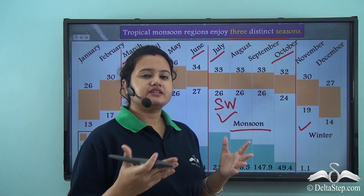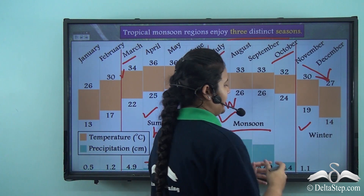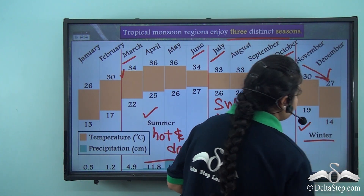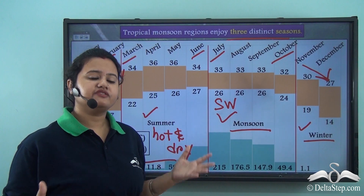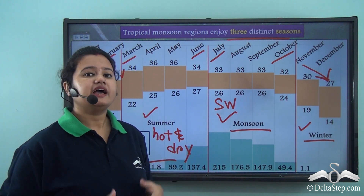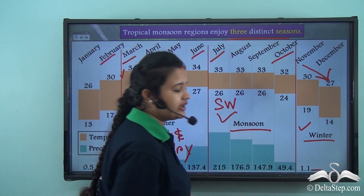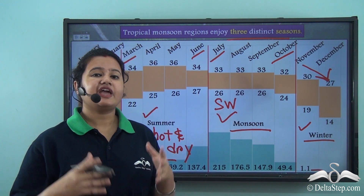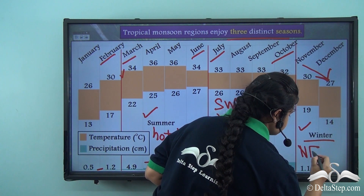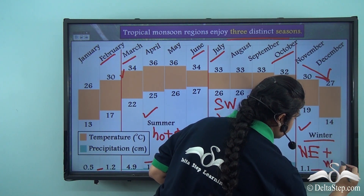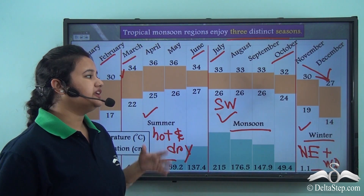The winter season prevails from November to February. During winter, the average temperature drops and the rate of precipitation is also very low. As discussed, winter rain is mostly caused by northeast monsoon winds and western disturbances. So, these two weather systems cause rain during the winter season.